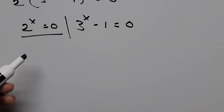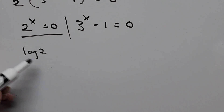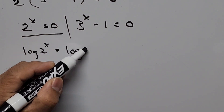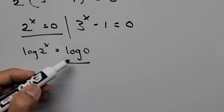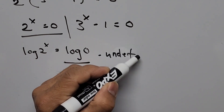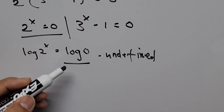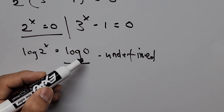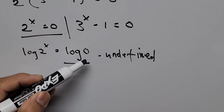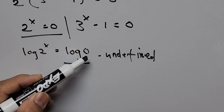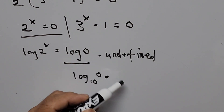Taking the first case, 2 to the power of x equals zero: we take the log of both sides, so log of 2 to the power of x equals log of zero. However, log of zero is considered undefined. This is because log base 10 of zero asks: to what exponent must we raise 10 to get zero? Rewriting in exponential form: 10 to the power of x equals zero.